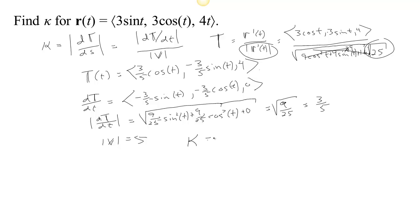So we now have kappa. Kappa is 3/5 divided by 5, which if you multiply top and bottom by 5 is 3/25.